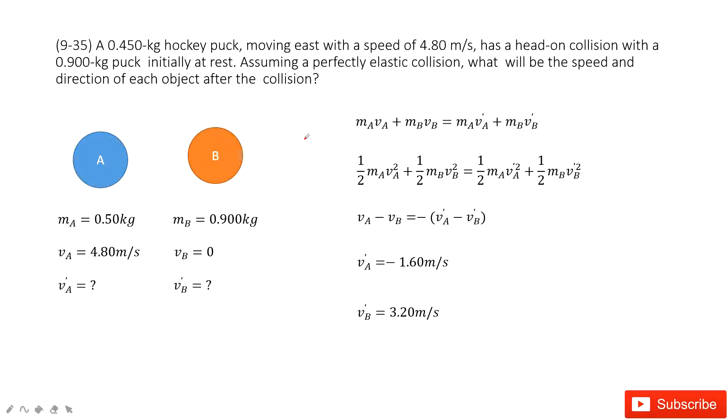Chapter 9 is about linear momentum. In this one, we can see we have two objects A and B. For each one, the mass is given and initial velocity is given.